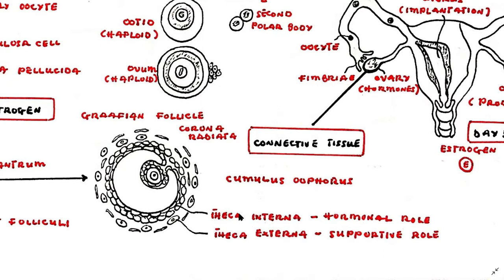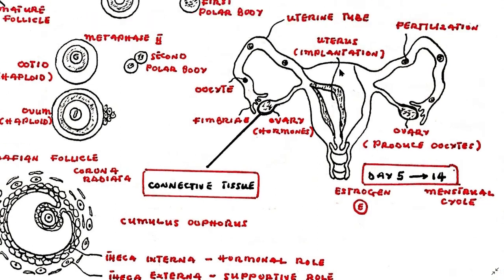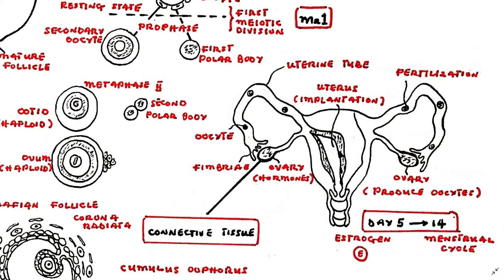The connective tissue cells of the ovary around the follicle differentiate and form two new layers: the theca interna and the theca externa. The theca externa has a supportive role. This follicle is now a mature vesicular follicle, also known as a Graafian follicle. The theca and granulosa cells of the developing follicles produce estrogens, causing thickening of the endometrial lining of the uterus and other preparations for receiving a fertilized oocyte. This occurs from days 5 to 14 of the menstrual cycle.